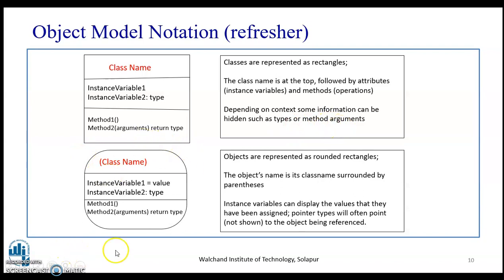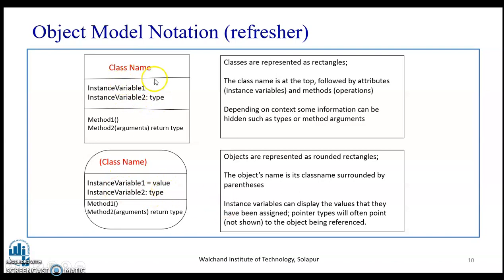The notation for objects is represented as a rounded rectangle. The object name is its class name surrounded by parentheses. When describing the object, it is a rounded rectangle, and instance variables can display the values they have been assigned. This is the notation for the object diagram and the class.